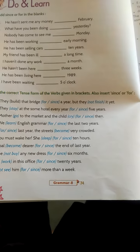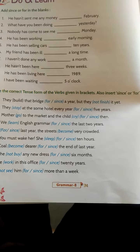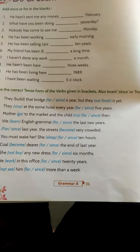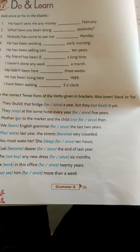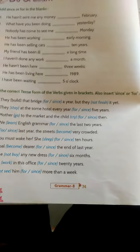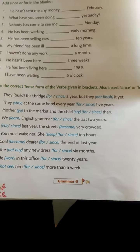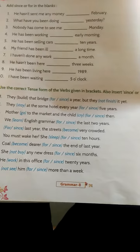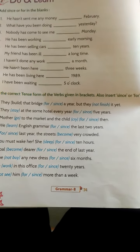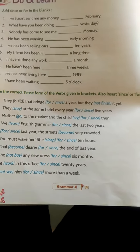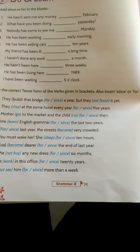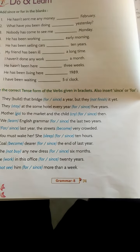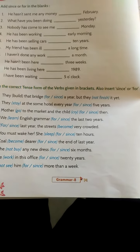Eight: 'He has not been here' — three weeks. That is a period of time, so we use 'for three weeks.' Ninth exercise: 'He has been living here' — since 1989. The year 1989 is a point of time, so we use 'since.'